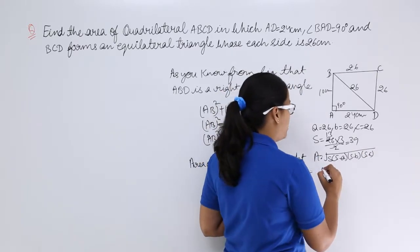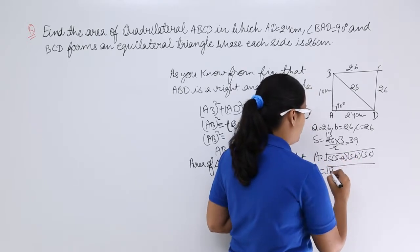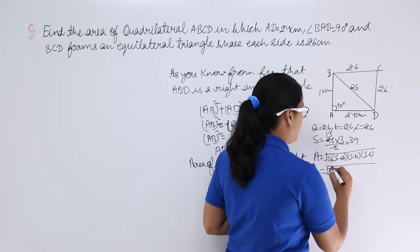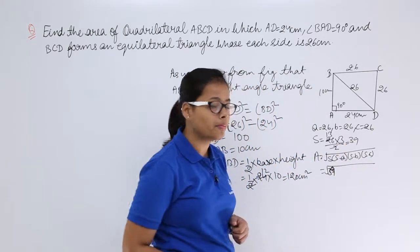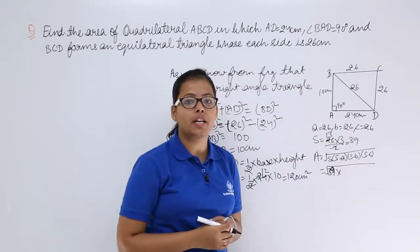Let's put all these values here. Value for S is 39. Now 39 minus 26 will give you 13.